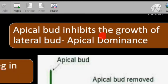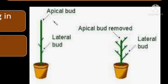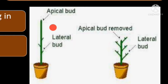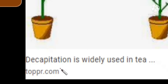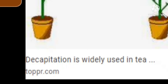The apical bud inhibits the growth of lateral buds — that is called apical dominance, and it is caused by auxin. So if we want the lateral buds to grow, we have to cut the apical bud. This process is called decapitation, and then the lateral buds will start to grow.